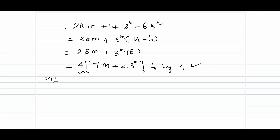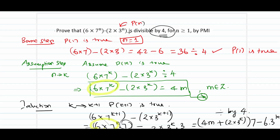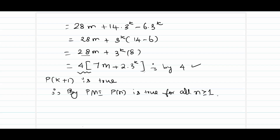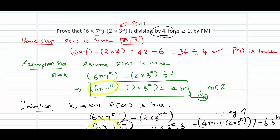Hence we have proved that p of k plus 1 is true — that is, p of k plus 1 is divisible by 4. Therefore, by the principle of mathematical induction, we prove that p of n is true for all values of n greater than or equal to 1 belonging to the set of natural numbers. Hence the statement 6 into 7 power n minus 2 into 3 power n is divisible by 4 for all n greater than or equal to 1.